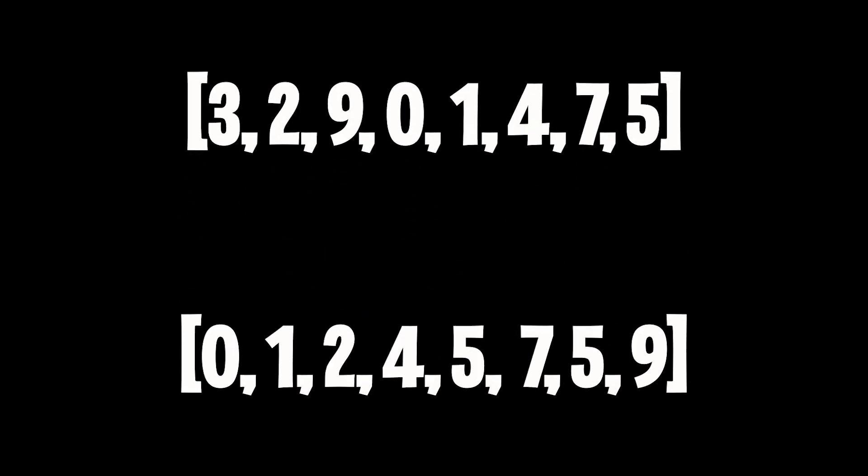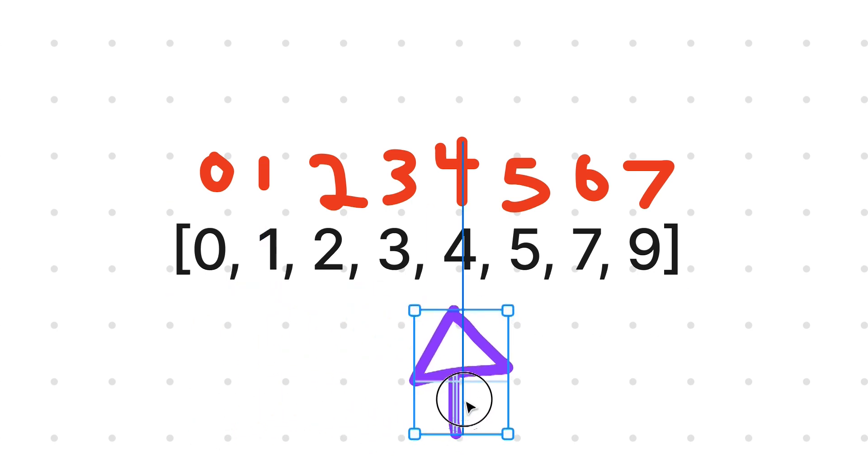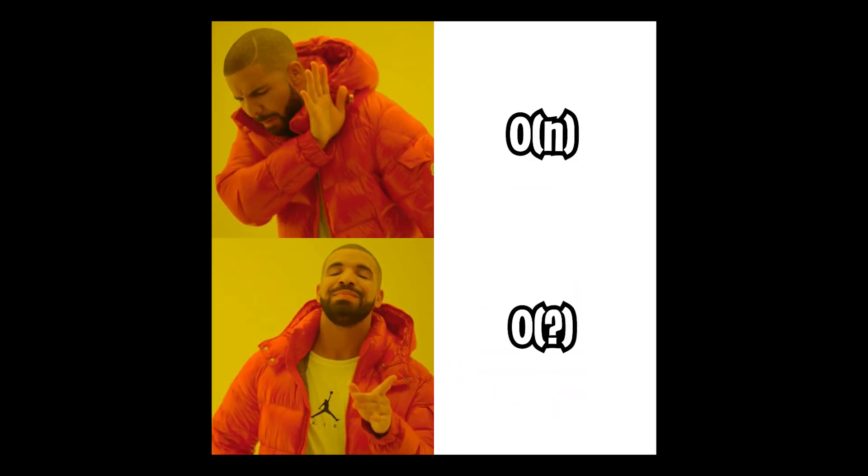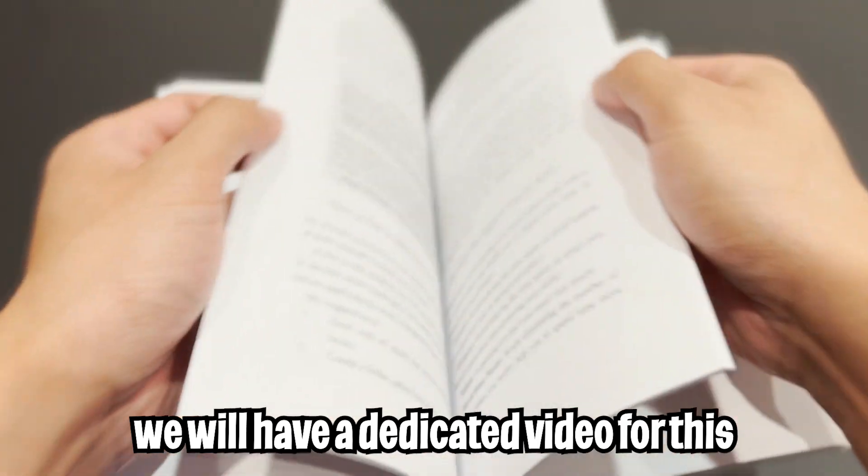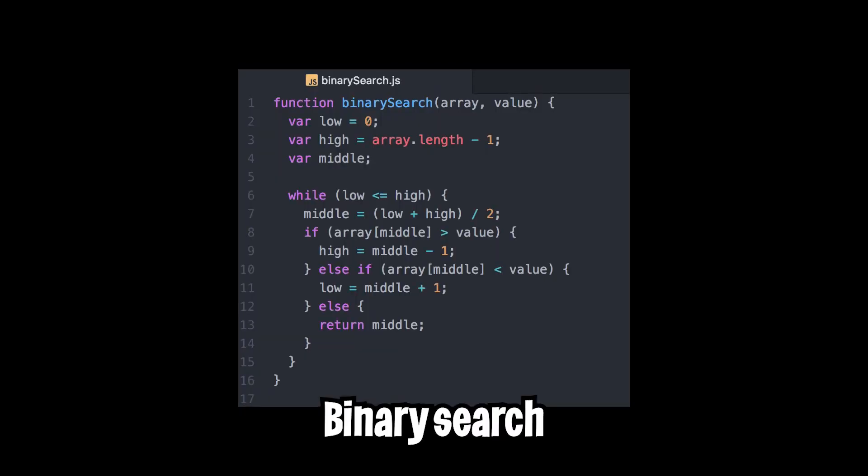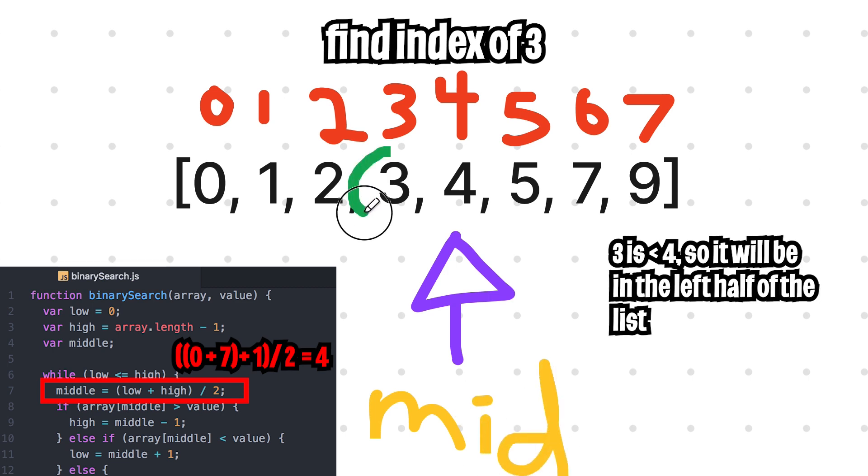Nice. Now what if the list was sorted? We could of course just loop through each item again, but now we can be a bit more clever. If you remember from the previous lesson, we can use an algorithm called binary search, where we start from the middle and move left or right depending on whether the number is bigger or smaller compared to the middle value.